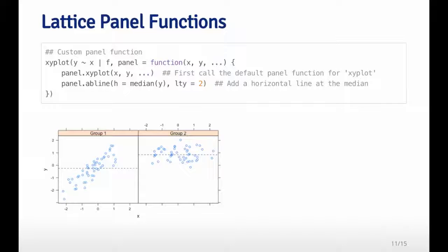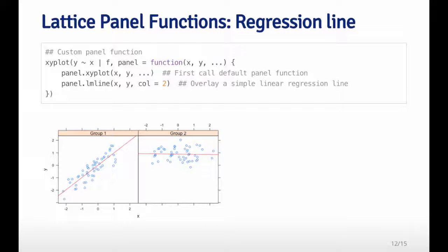Now I can see there's a dashed line in each panel, right at where the median of the y coordinates is. Another fancier thing I can do is rather than add the median, it might be useful to add a regression line. You can look at the linear relationship between x and y within each of the panels.